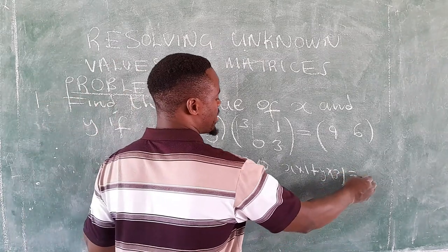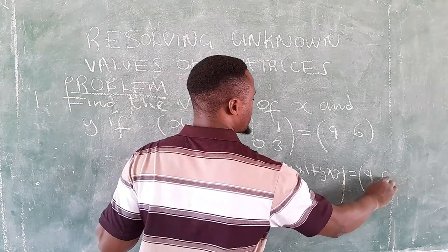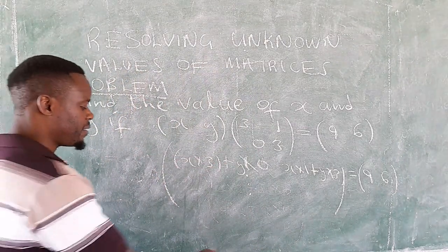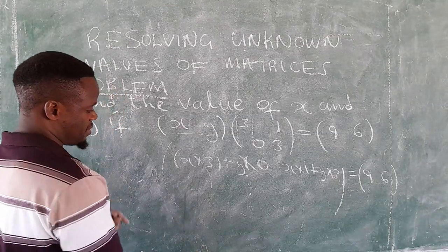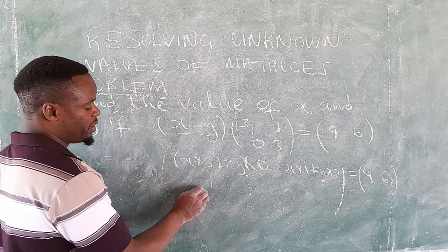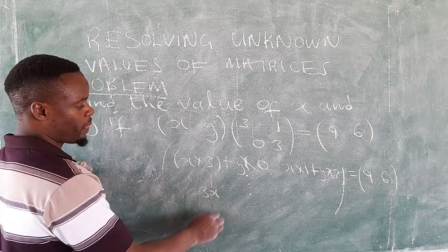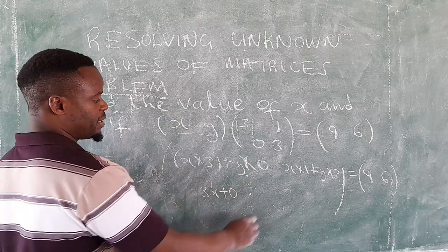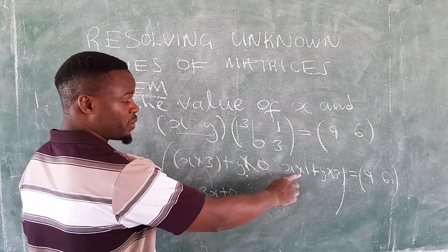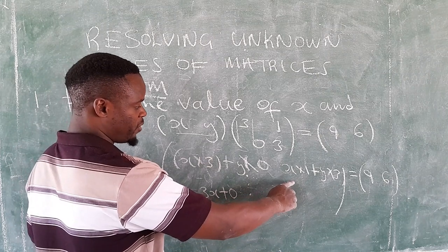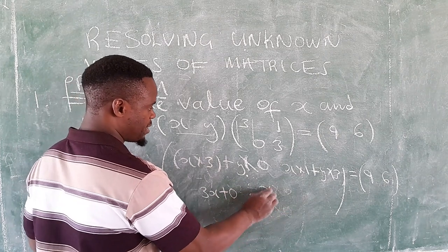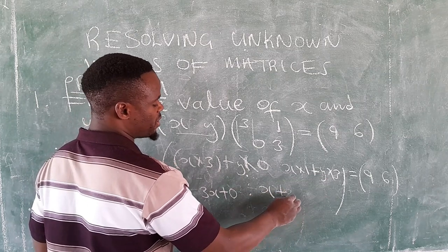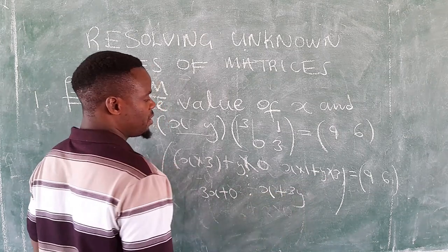And that should equate to 9 and 6. We can execute the operations here so that we find the answer. So x by 3, that would be 3x, then y by 0 that would be plus 0. Then x by 1 that would be x, then plus y times 3 that would be 3y.